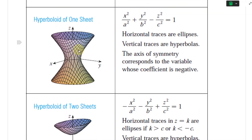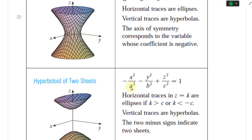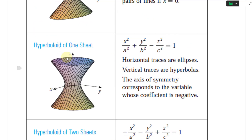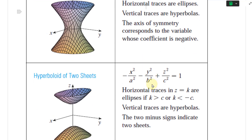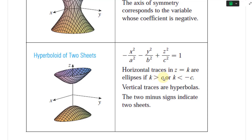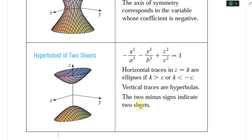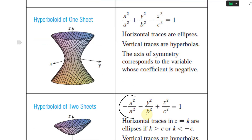The hyperboloid of two sheets has equation −x²/a² − y²/b² + z²/c² = 1. Comparing it with the one-sheet version: the one-sheet hyperboloid has two positive terms and one negative, while the two-sheet has two negatives and one positive. Horizontal traces in z = k are ellipses only if |k| > c. Vertical traces are hyperbolas. The two minus signs indicate two sheets, while one minus sign indicates one sheet — hyperboloid of one sheet, hyperboloid of two sheets.